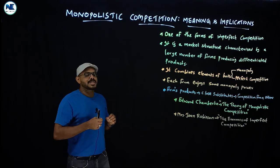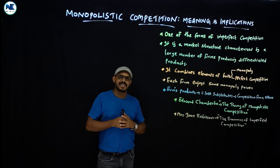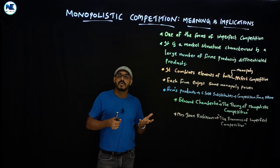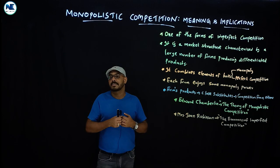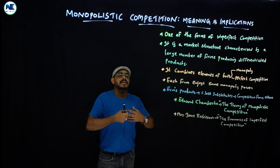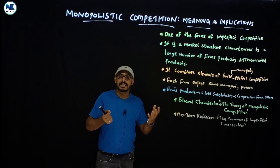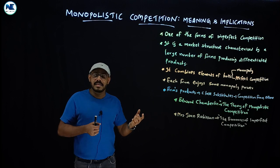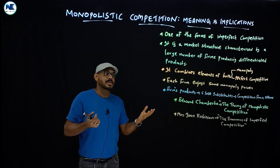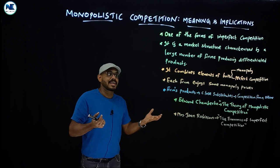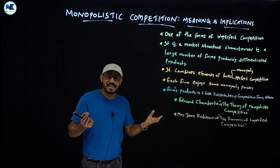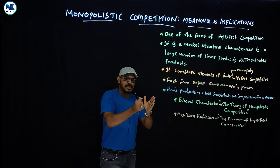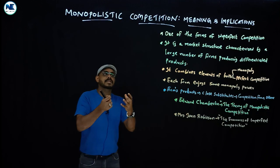The simple question is: what is monopolistic competition? A perfect example is the soap market — we can see a large number of sellers: Pears, Dettol, Medimix, Sindol, Sandoor, Lifebuoy, etc. These are differentiated products that are close substitutes of each other.